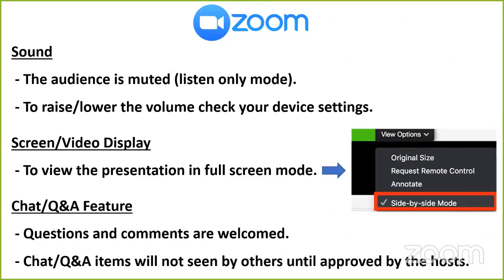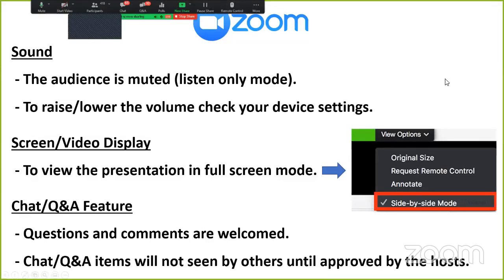If you're watching on Zoom, we don't have time in these programs to do a full Zoom demonstration. There are usually only two things people want to know how to adjust. One is the sound — everyone will be in listen-only mode or muted, so if you start cheering during the film, no one will be able to hear or see you. If you want to raise or lower the volume, you can check the settings on your own device. To adjust the screen display so the slides take up the full screen, look for 'view options' at the top, and click off 'side-by-side mode.'